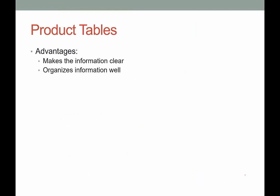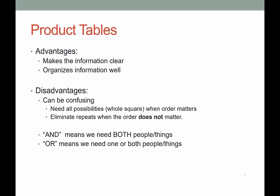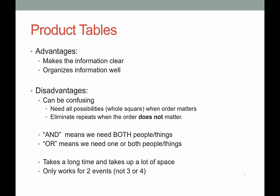So those were two examples of using product tables. The advantage is that it makes information clear and organizes it really well. However, it can be confusing — we need all possibilities when order matters, and we eliminate repeats when order does not matter. Also, the wording of questions can be tricky: if it says and, we need to list combinations including both; if it says or, a success includes one, the other, or both. Other disadvantages: it takes a long time to do by hand, takes up a lot of space, and the biggest disadvantage is that it only works for two events — not three or four or more. Luckily there are other strategies discussed in other videos. I hope you enjoyed it, thank you for stopping by.